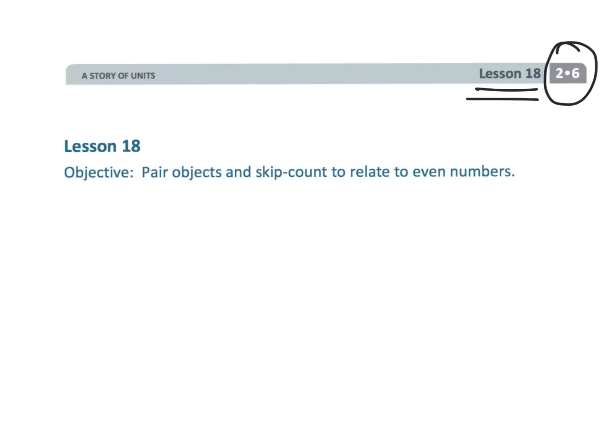That wraps up second grade module 6 lesson 18, where we were pairing up objects and doing a little bit of skip counting. It was the fact that every object has a partner which means it is even. But if any object doesn't have a partner, that makes it not even.